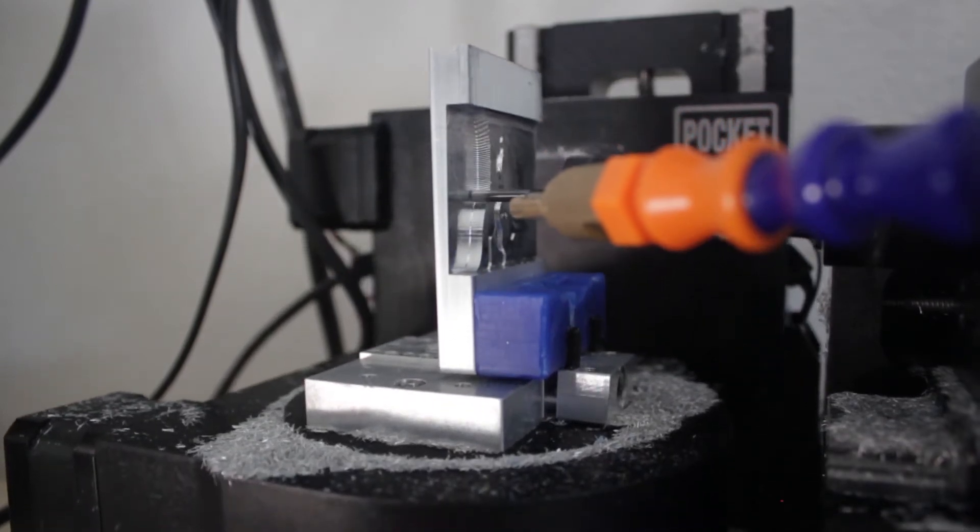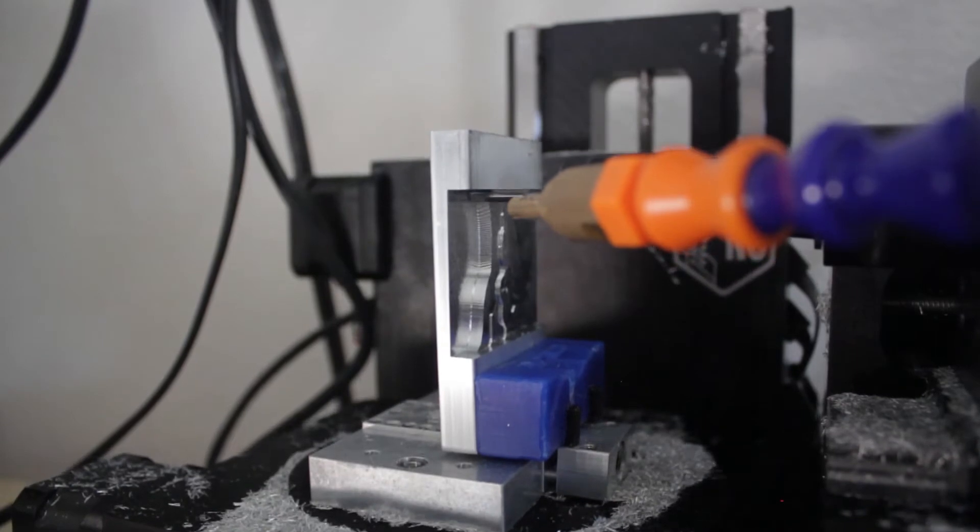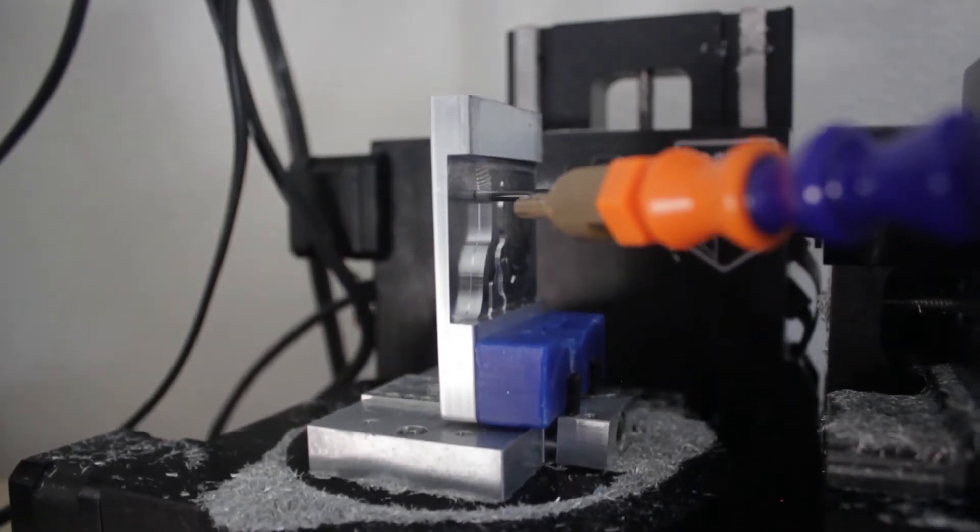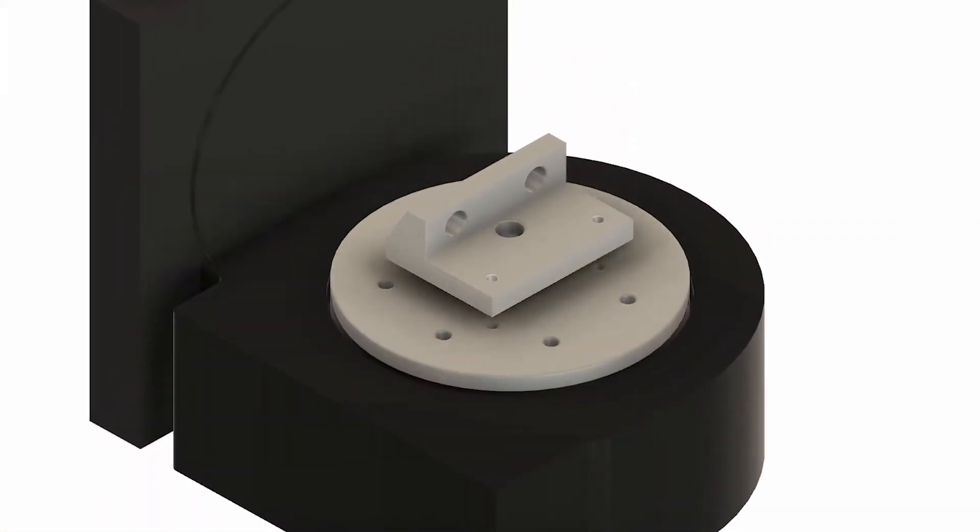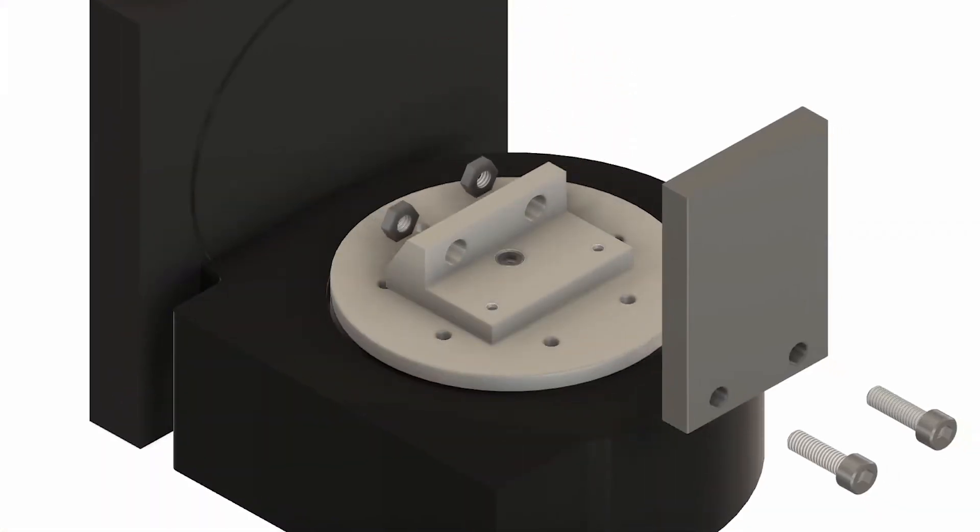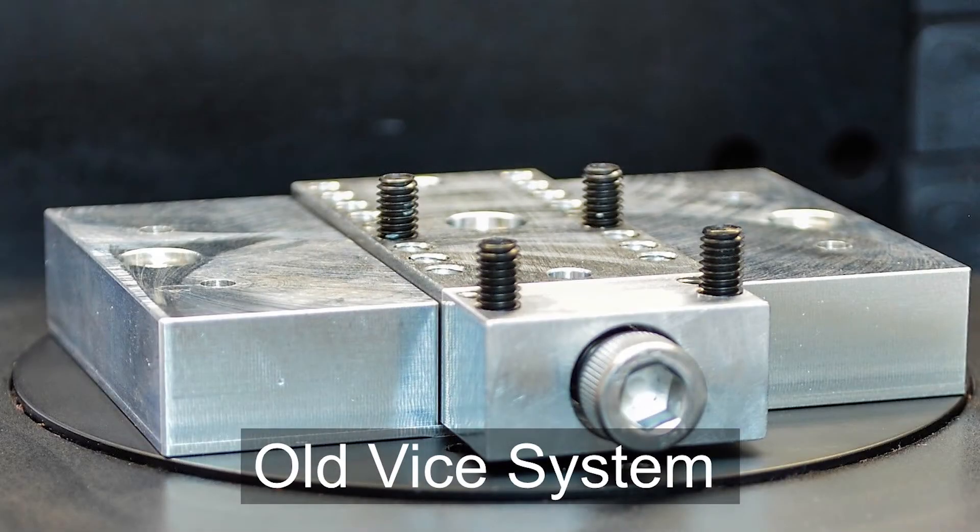One of the ways I thought about improving the project overall is building a new vise system that would hold the bar stock with more tension. As you can see here on the screen, this is the design I came up with. It replaces the old system, which is just a basic hard stop, with an adjustable clamp that moves into it.